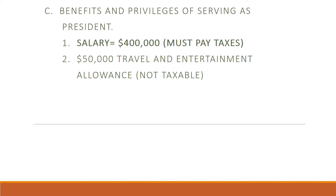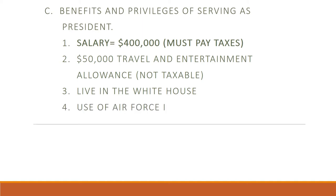You also get a travel and entertainment allowance, although $50,000 is on the very low end — that's technically how much you get, but Trump has spent millions and millions of dollars since he became president on going golfing. You get to live in the White House, which is a pretty nice house — updated every couple of decades. If you weren't aware, the White House was built by enslaved people. You also get to use Air Force One, their special plane.